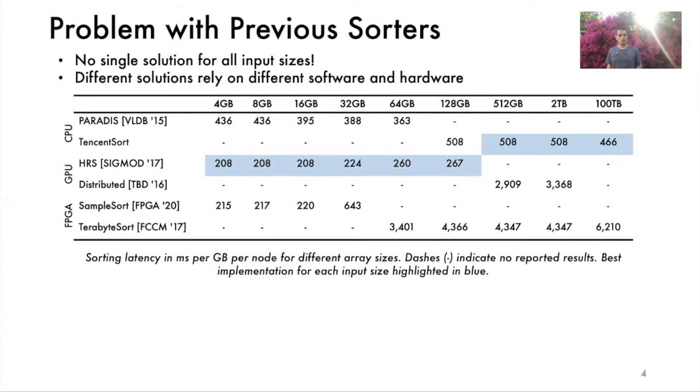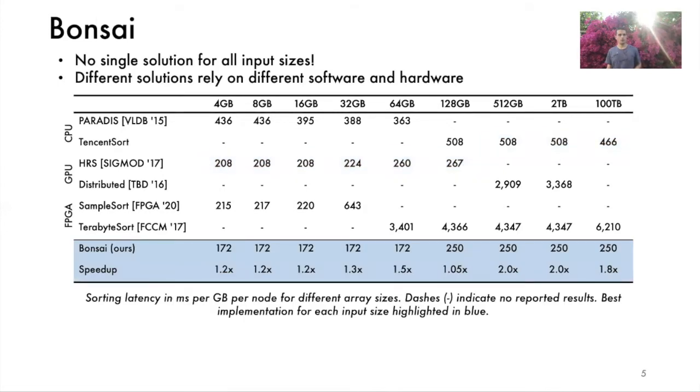The key insight is that each sorter performs well only within a specific problem size. To resolve the drawbacks of earlier implementations, we introduced Bonsai, an adaptive FPGA sorter that can use any computational and memory resources optimally. The adaptive architecture allows Bonsai to configure its sorting hardware to work well with any problem size. For a 4 to 32 gigabyte array size, Bonsai has a minimum of 2.3x, 1.3x and 1.2x speedup over the best designs on CPU, FPGA and GPU respectively.